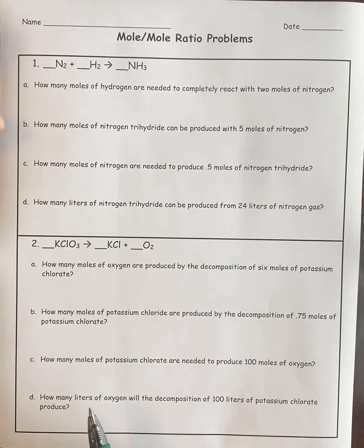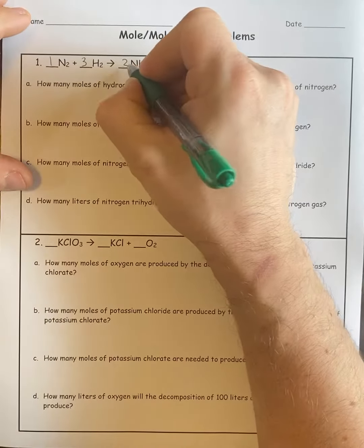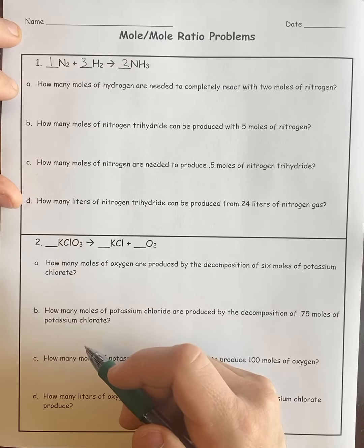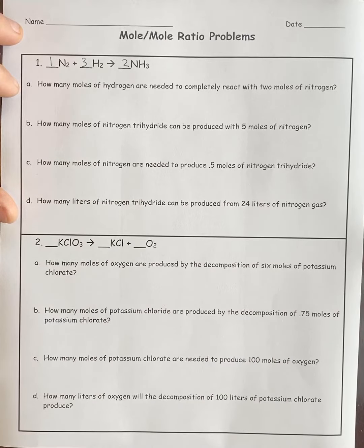The first thing you're going to need is a balanced chemical equation. This chemical equation, 1, 3, 2 when balanced—I always like to write in the 1, especially for these types of problems because it makes it a little bit easier. Now we've got 5 questions based off this balanced chemical equation.